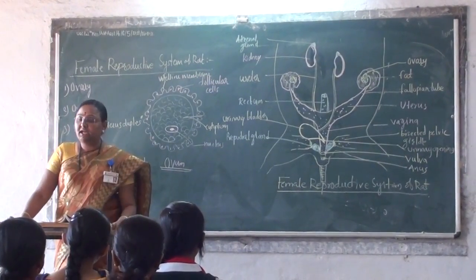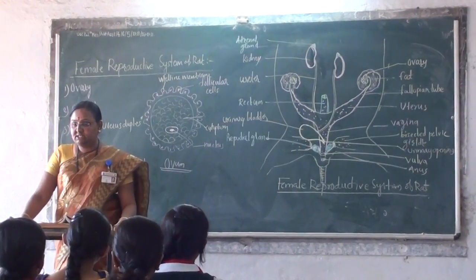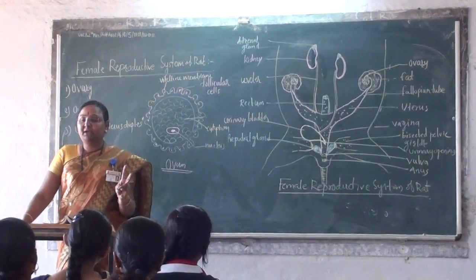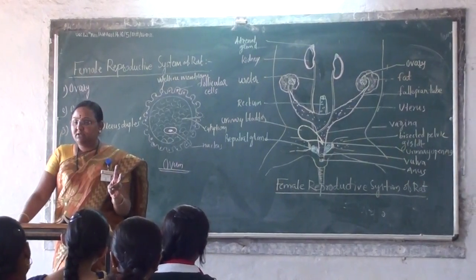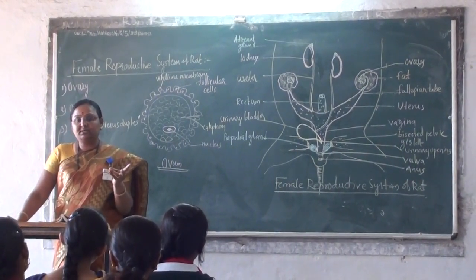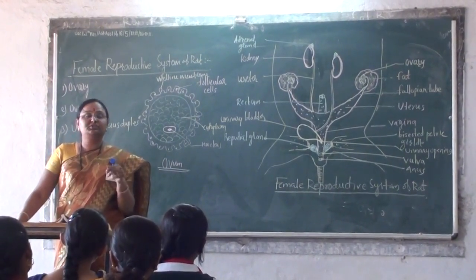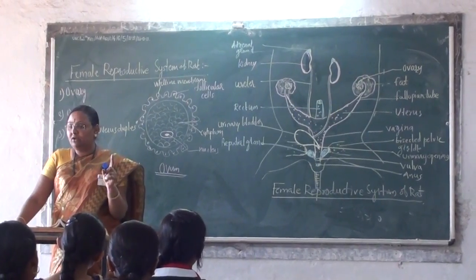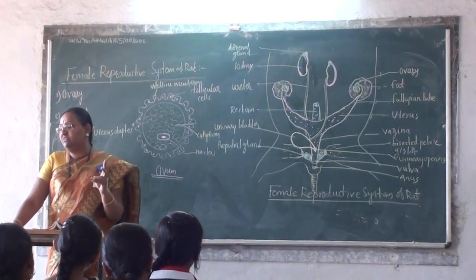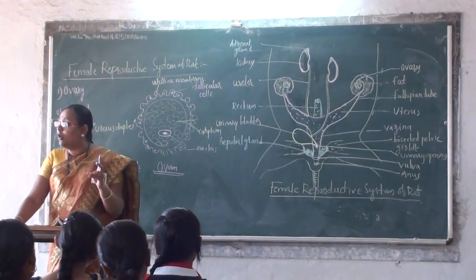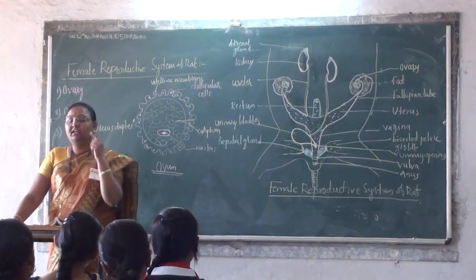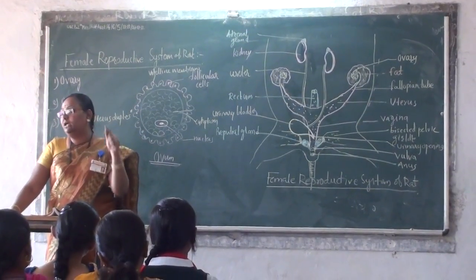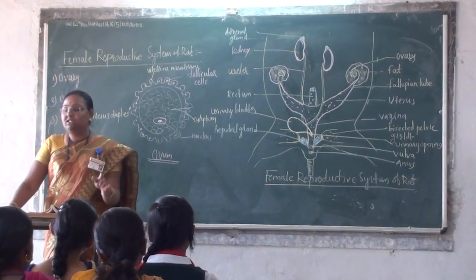The first part is the testes. The second part is the epididymis. The epididymis is divided into three parts: one is the caput, second is the corpus, and one is the cauda. Finally, the epididymis connects with a duct-like structure.